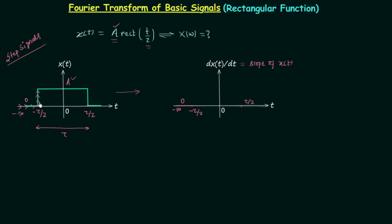After this, when t is equal to minus tau by 2, x(t) has an upward level switching. We have an infinite slope, so dxt over dt will be represented by an impulse with weight equal to plus A — plus because it is an upward level switching, and A because the discontinuity is equal to A (the signal jumps from 0 to A, so A minus 0 equals A).